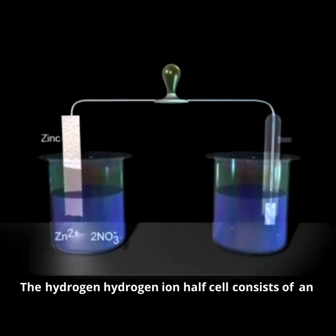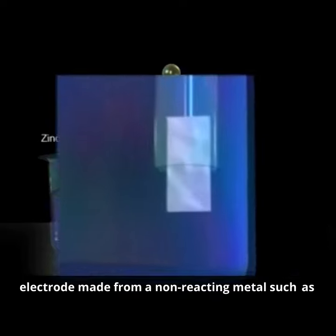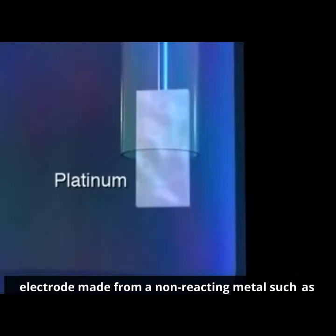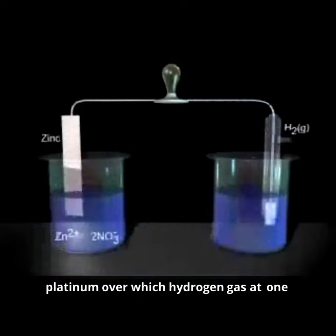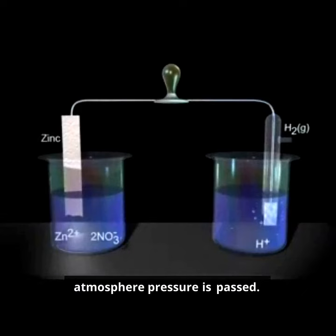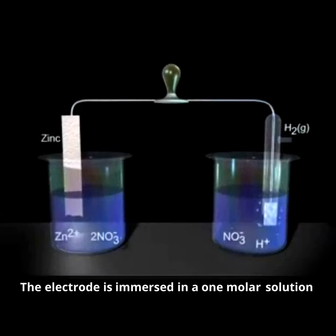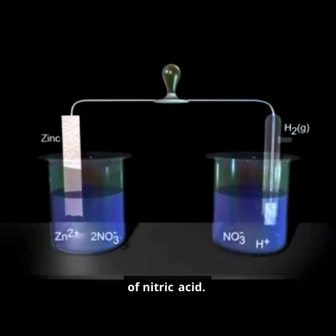The hydrogen hydrogen ion half cell consists of an electrode made from a non-reacting metal, such as platinum, over which hydrogen gas at one atmosphere pressure is passed. The electrode is immersed in a one molar solution of nitric acid.